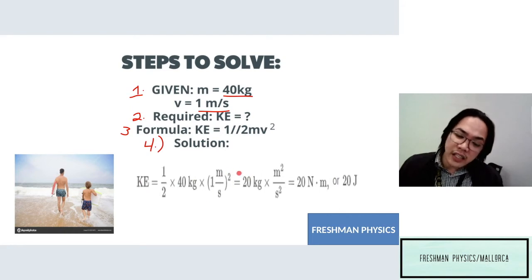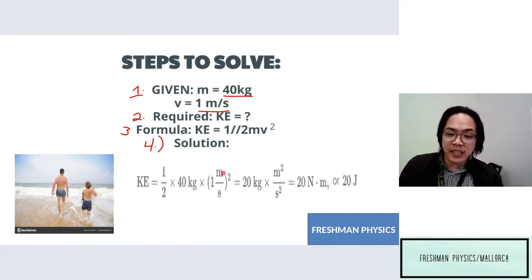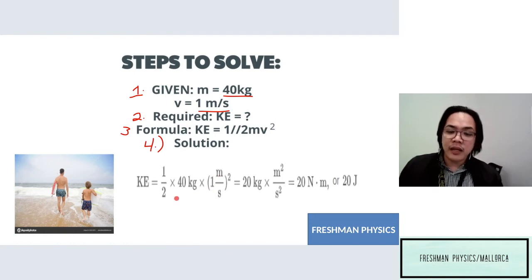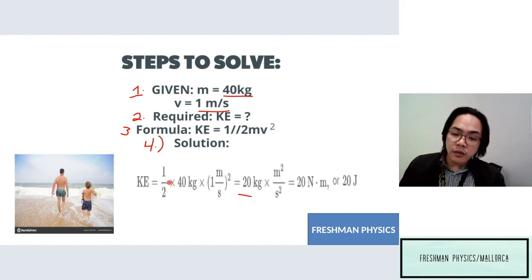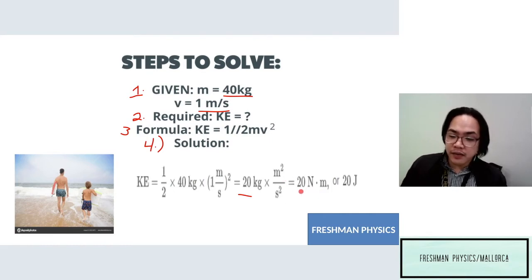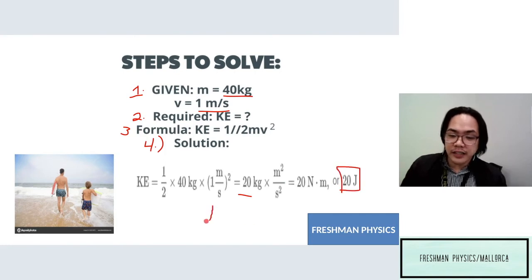The squared means you multiply the number by itself, but 1 times 1 is still 1. Now, one-half of 40, or 40 divided by 2, equals 20. Copy the units — you cannot cancel them because they are different. So the result is 20 kg·m²/s², which is equivalent to 20 newton-meters, or 20 joules. The unit we use for kinetic energy is joules, abbreviated as J.